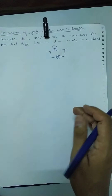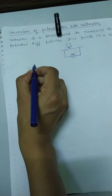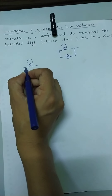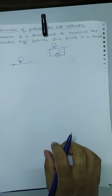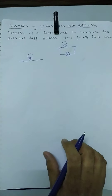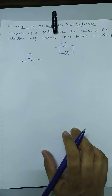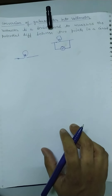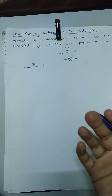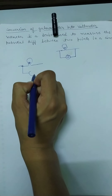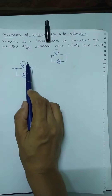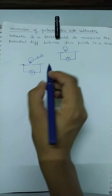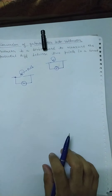Maan lo hamare paas ek bulb hai aur hume us bulb ka potential difference measure karna hai. Hamare paas voltmeter nahi hai — hamare paas sirf galvanometer hai. To hum kya karenge? Hum is bulb ke saath parallel mein galvanometer ko laga denge. Parallel mein attach kiya hai to dono ke across potential difference same rahega.